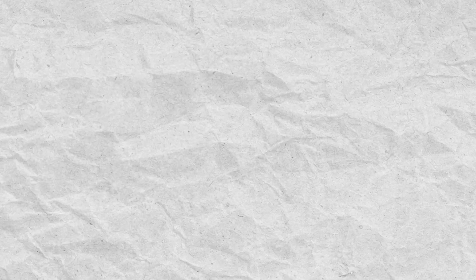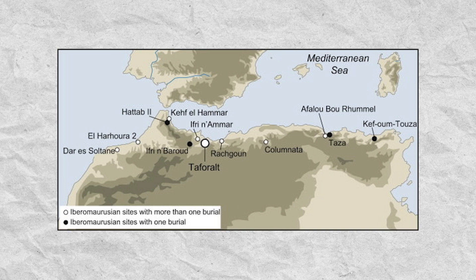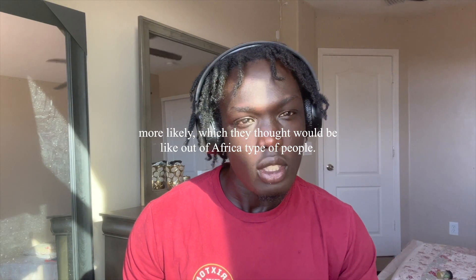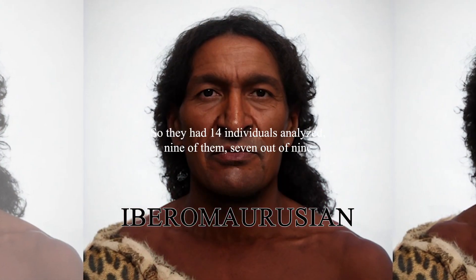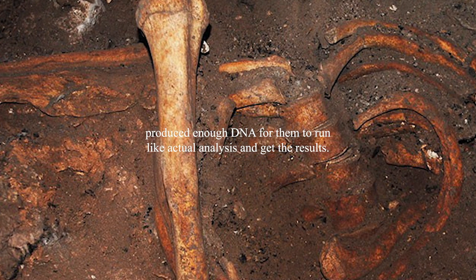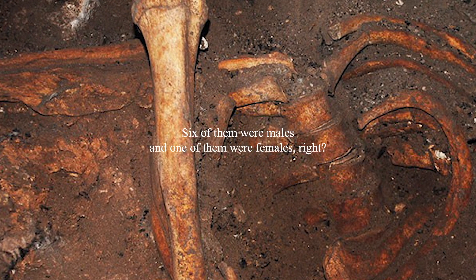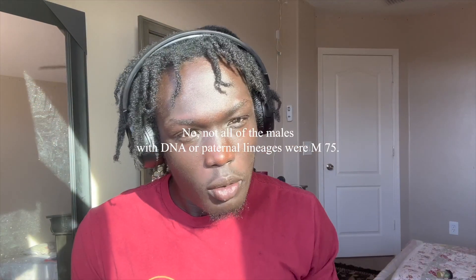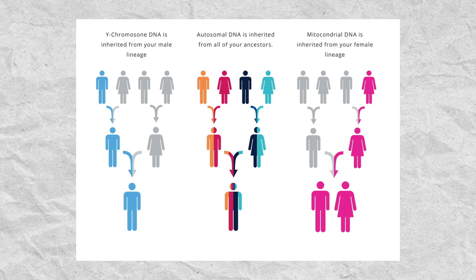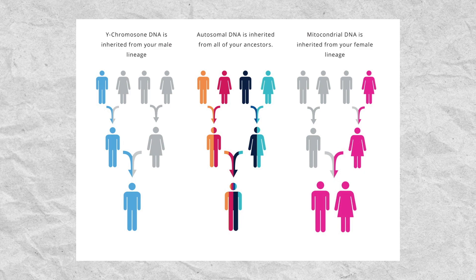The first site I'm going to talk about is Taforalt, which shows a Eurasian origin of Paleolithic North Africa — these people had many affinities with Eurasian populations, likely representing an out-of-Africa back-migration. Taforalt was an Ibero-Maurusian site with 14 individuals analyzed; 7 out of 9 produced enough DNA. Six were male, one female. All males had Y-DNA haplogroup E-M75. For mtDNA, they recovered M1, U6, and apparently R0.